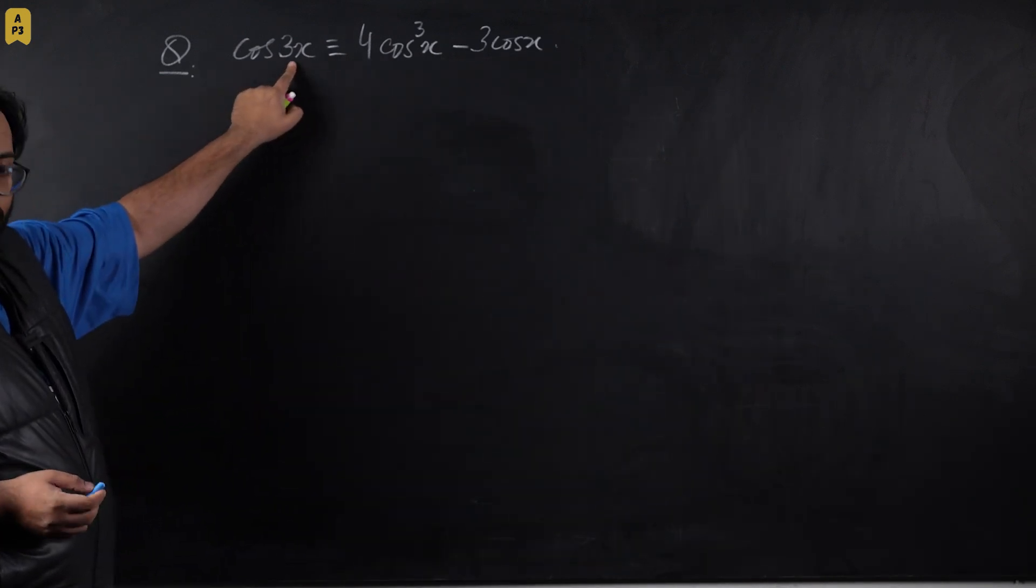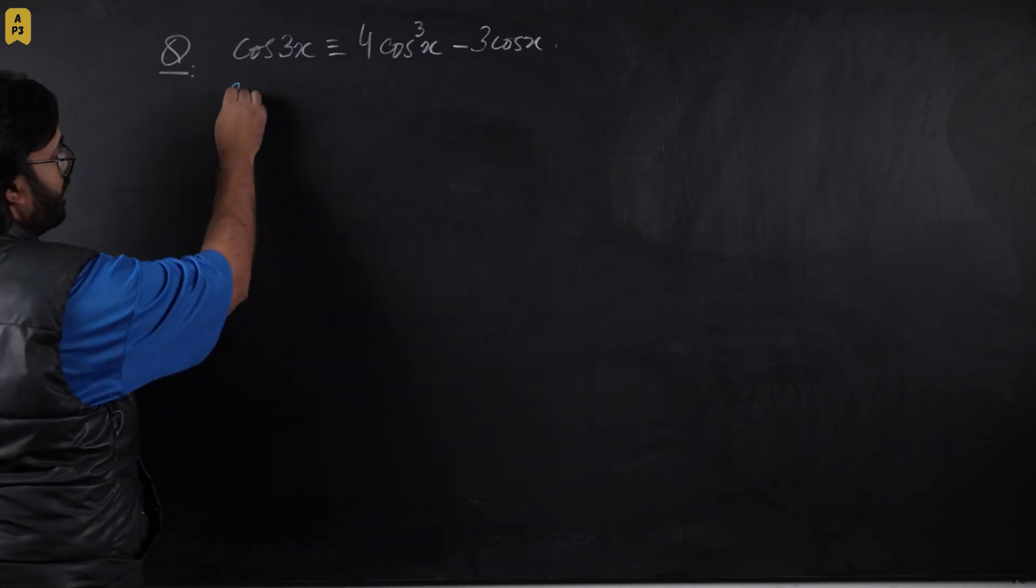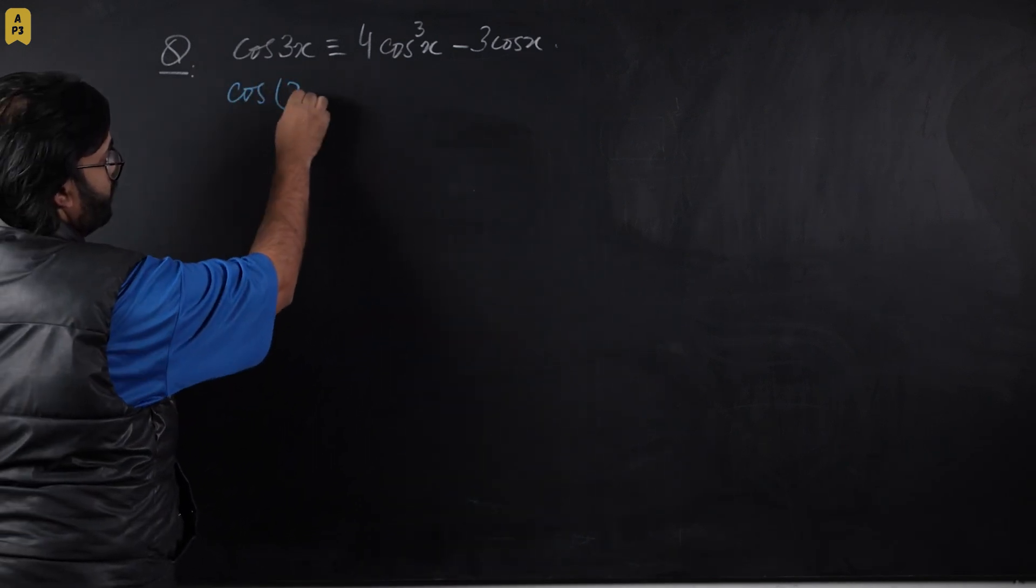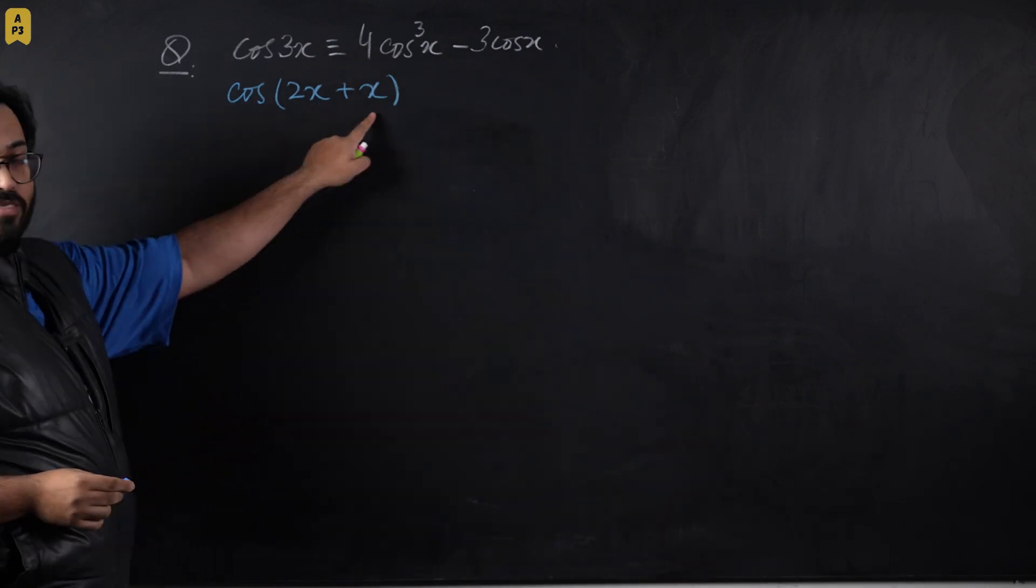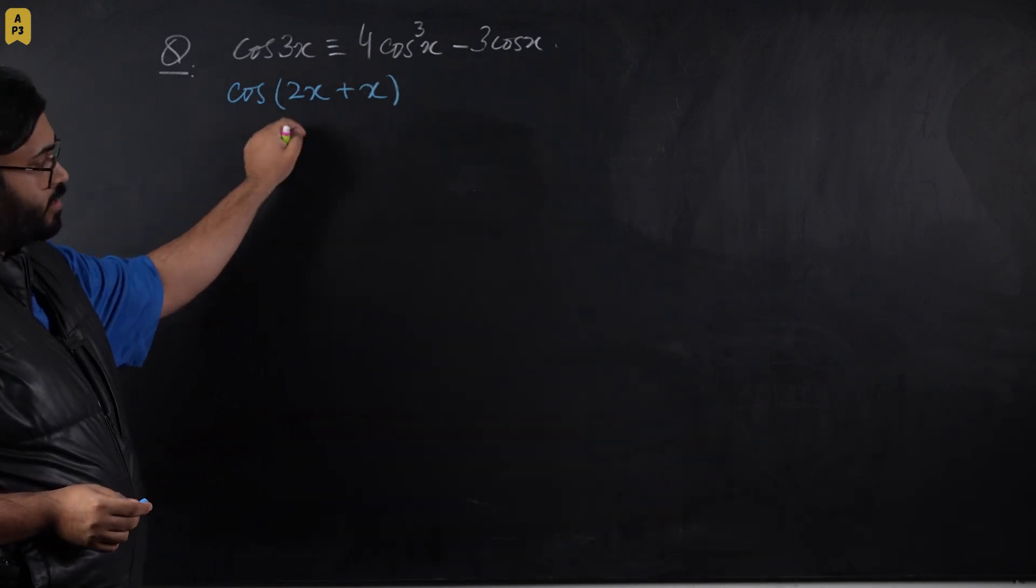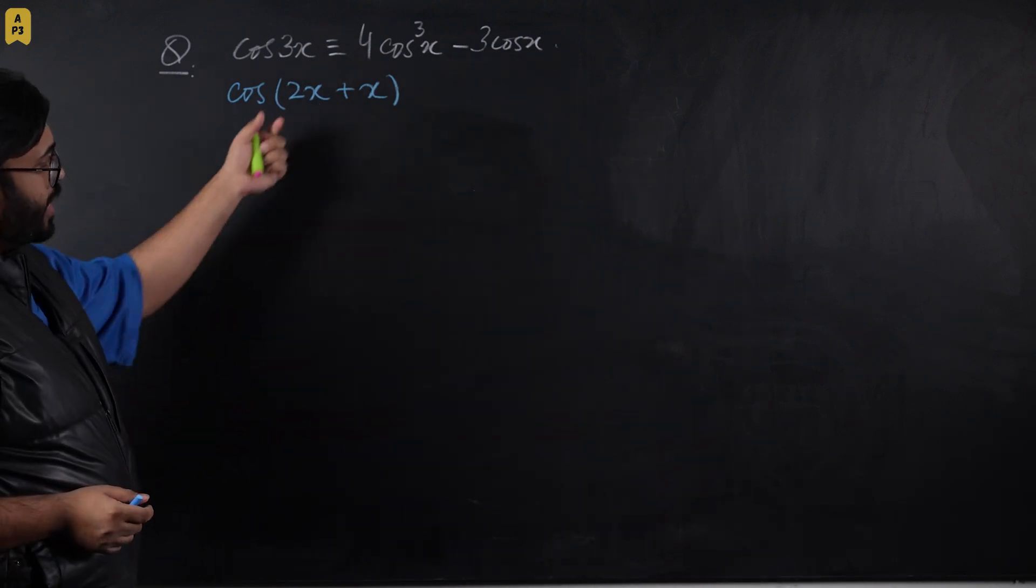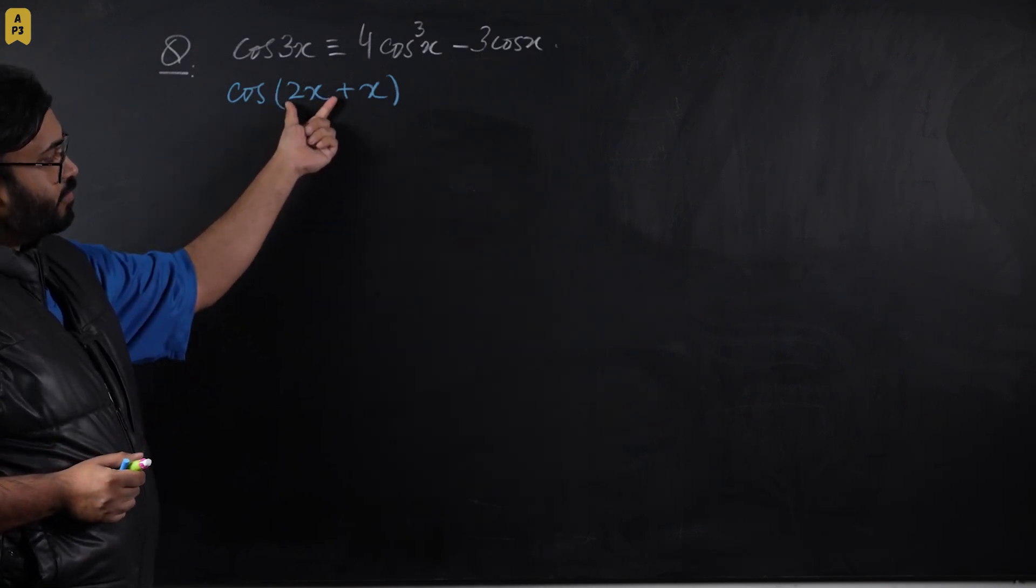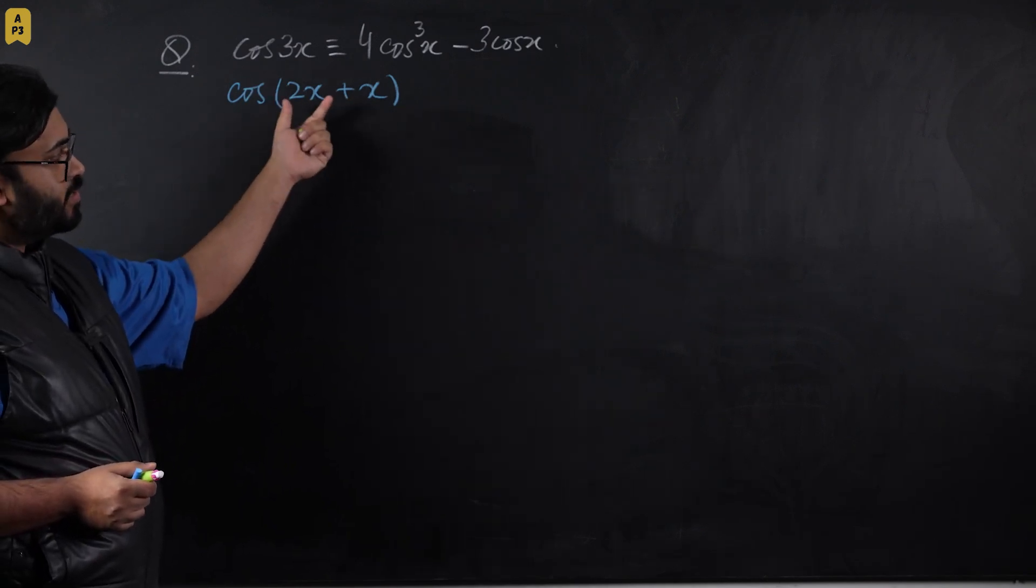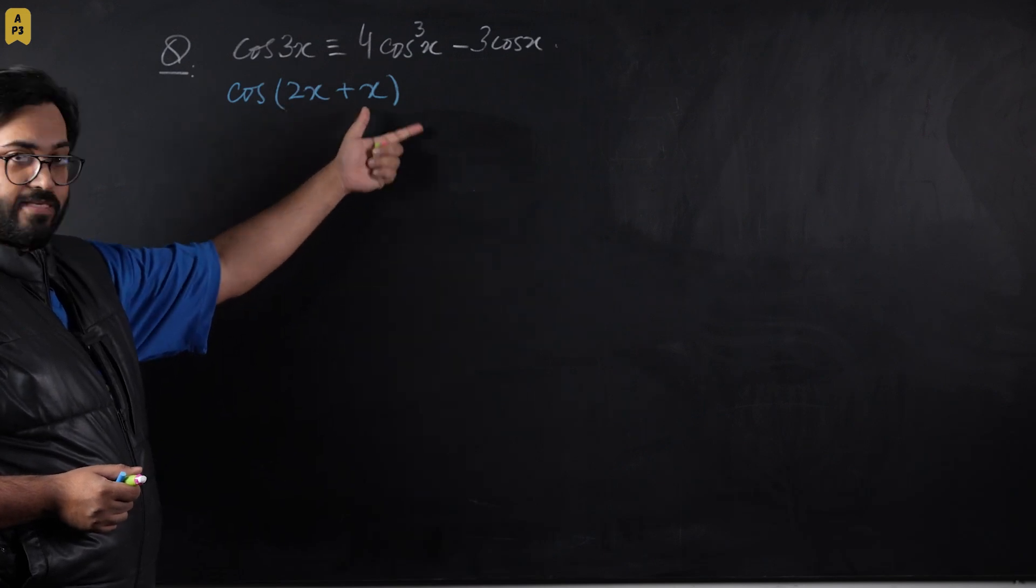This cos 3x must be broken into cos(2x + x). First, we're going to use a compound angle formula to open these brackets, which will break the angle down into two different terms: for 2x separately and for x separately.